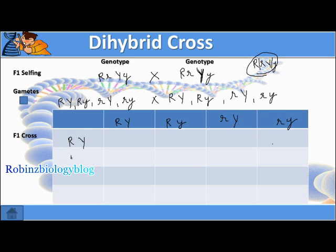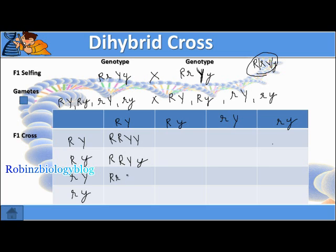Similarly here we have capital R capital Y, capital R small y, small r capital Y, and small r small y. Once we start filling here, we get capital R capital R capital Y capital Y, capital R capital R capital Y small y, capital R small r capital Y capital Y, and capital R small r capital Y small y.